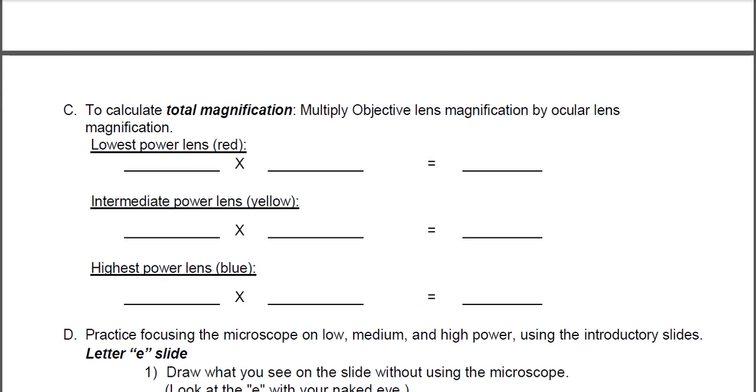If we take the objective lens and multiply it by the ocular lens magnification, we get the total magnification. You don't have a microscope to take these off of, so what I'm going to tell you is that on most microscopes, the ocular lens is a 10x magnification. The objective lens normally goes 4, 20, and 100. So we're going to go with those powers, and you can calculate the total magnification.